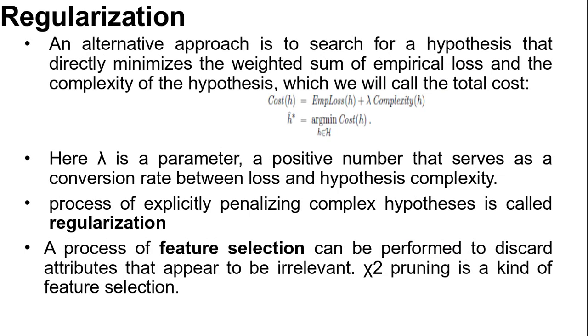Another way to simplify a model is to reduce the dimensions that the model works with. A process of feature selection can be performed to discard attributes that appear to be irrelevant. Chi-square pruning is a kind of feature selection. We have already discussed chi-square in our previous video.